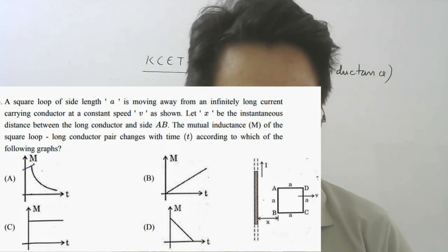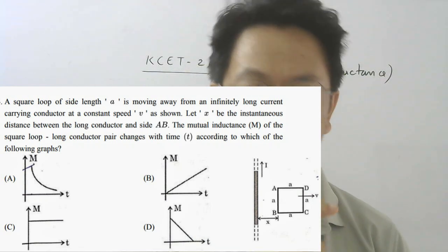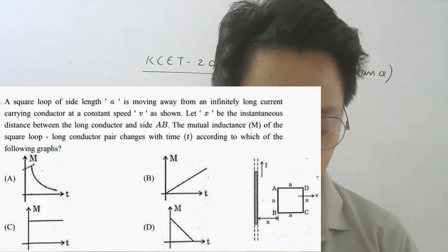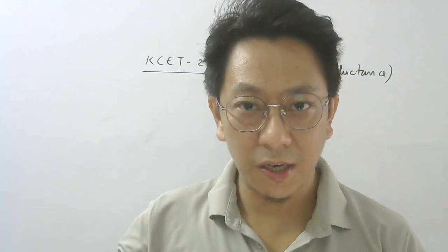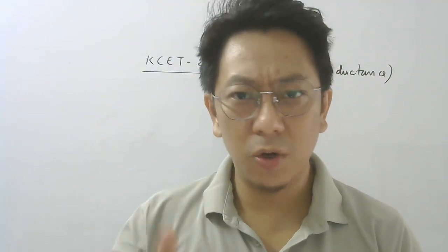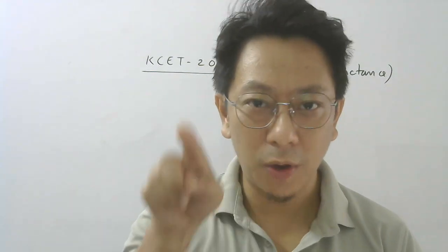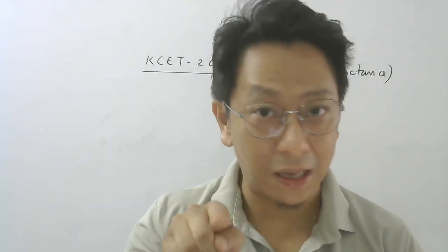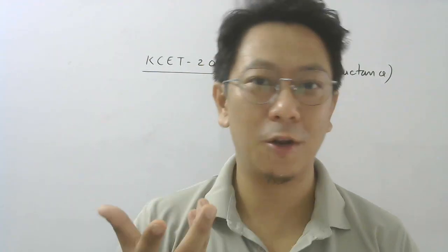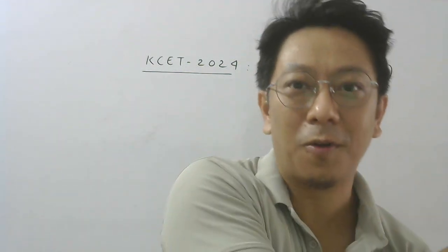Let me read the question. It says: a square loop of side length A is moving away from an infinitely long current-carrying conductor at a constant speed. There is a straight current-carrying conductor — you all know it produces a magnetic field. In that magnetic field, there is a square loop, so the magnetic field lines will pass through the area of the square loop.